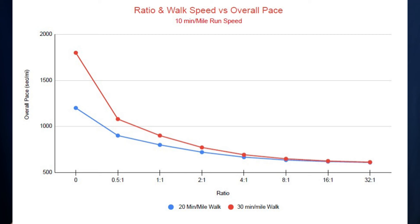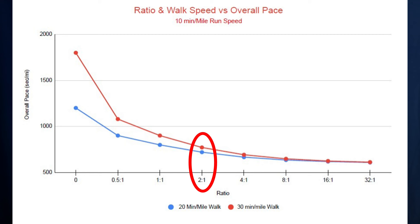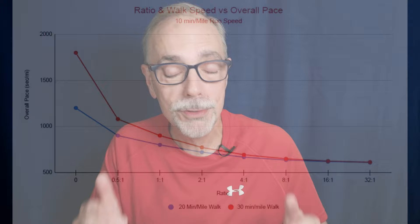I did the analysis also looking at two different walking speeds with a single running speed of 10 minutes per mile. I compared a 20-minute-per-mile walking speed against a 30-minute-per-mile walking speed. At a zero ratio the two curves start at different points, but by the time you get to almost a two-to-one ratio and higher, the curves are nearly identical. So even though walking faster gives improvement at very low ratios, you also get a lot of improvement just by changing your ratio. I still recommend changing your ratio — run a little longer — rather than walking faster, so you preserve the recovery benefits of the walk break.